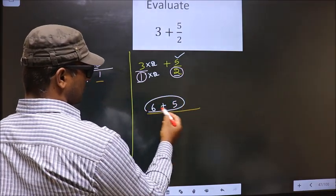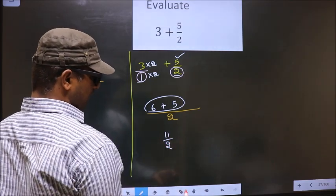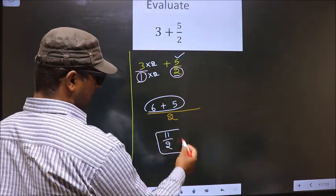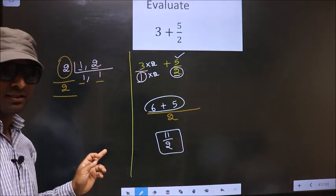Now, 6 plus 5 is 11 by 2. We cannot simplify this fraction. So this is our answer. Am I clear?